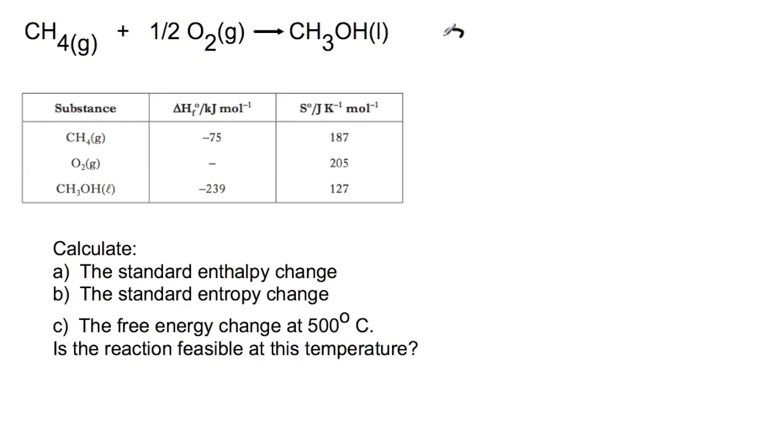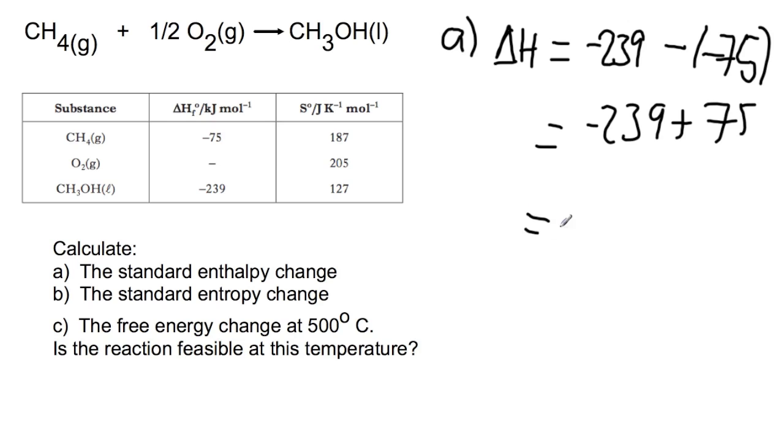For part A we are looking at the standard enthalpy change. So our enthalpy change is going to be the enthalpy of our products minus the enthalpy of our reactants. So our product here is minus 239. There is no standard enthalpy of formation for an element in its standard state such as oxygen, so the only reactant we're dealing with is methane. So our enthalpy change here is minus 164 kilojoules per mole, so an exothermic reaction.